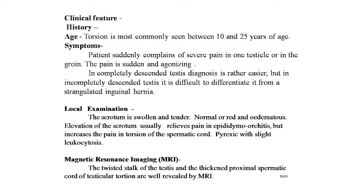Clinical features: torsion is most commonly seen between 10 to 25 years of age; the second most common incidence is during infancy due to congenital causes. The patient suddenly complains of severe pain in one testicle or groin — sudden and agonizing. In a completely descended testis, diagnosis is easier, but it is difficult to differentiate from a strangulated inguinal hernia in incompletely descended testis. On local examination, the scrotum is swollen and tender; elevation of the scrotum usually relieves pain in epididymitis but increases pain in torsion of the spermatic cord. Pyrexia with slight leukocytosis is present.